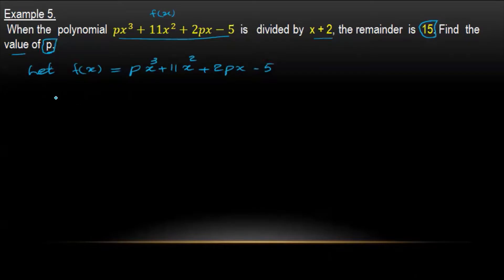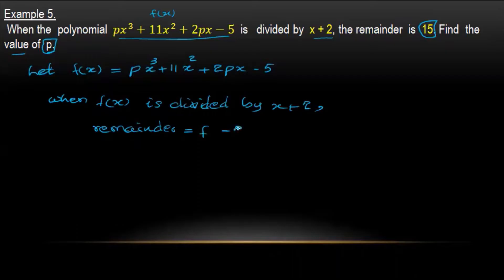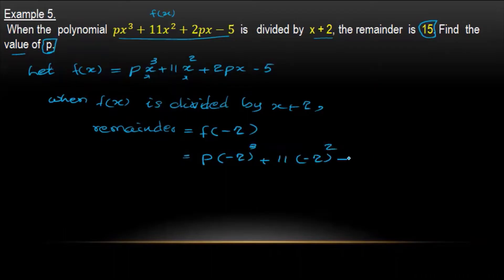When f(x) is divided by x plus 2, the remainder is f(minus 2). Substituting x equals minus 2: b into (minus 2) cubed plus 11 into (minus 2) squared plus 2b into (minus 2) minus 1 equals 15.